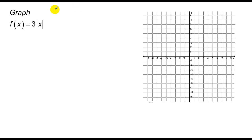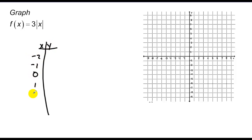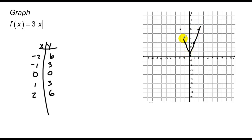Let's do one more: y = 3|x|. Using values -2, -1, 0, 1, 2: plugging in -2 gives 6, -1 gives 3, 0 gives 0, 1 gives 3, 2 gives 6. When I graph this, notice the graph is noticeably steeper — skinnier. It's definitely changed, but my vertex is still at (0, 0). There are patterns happening here.